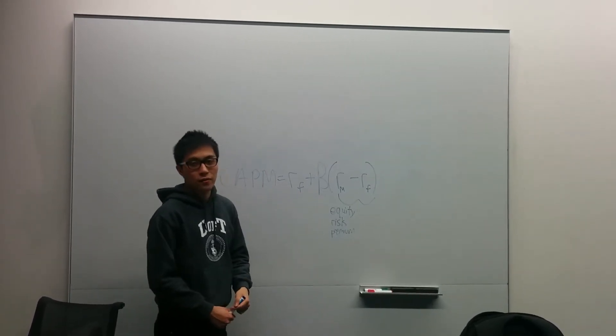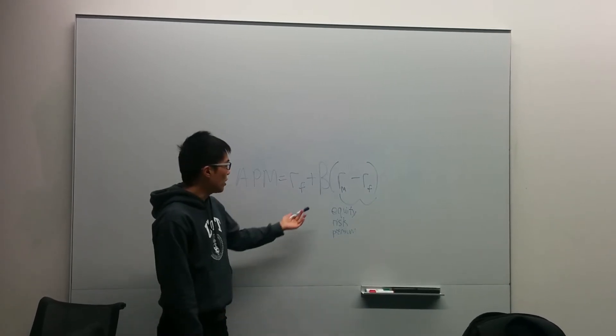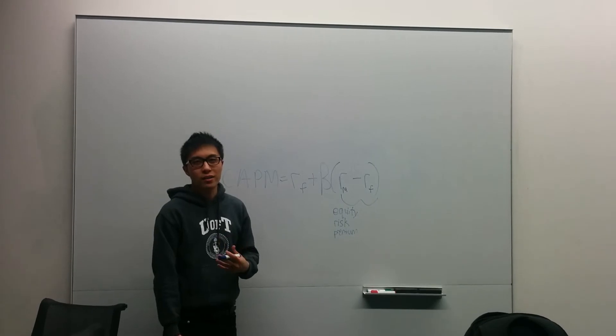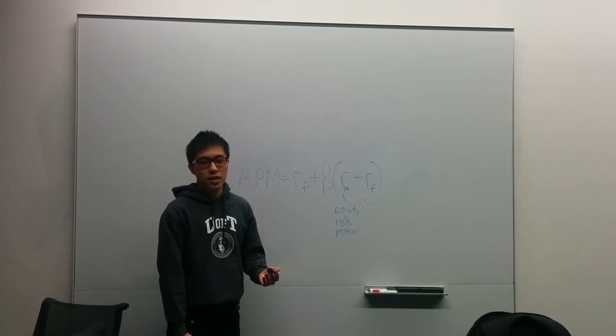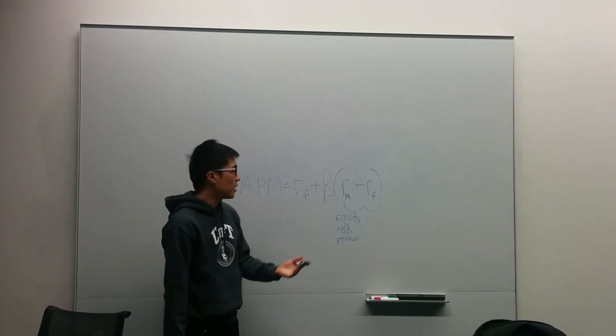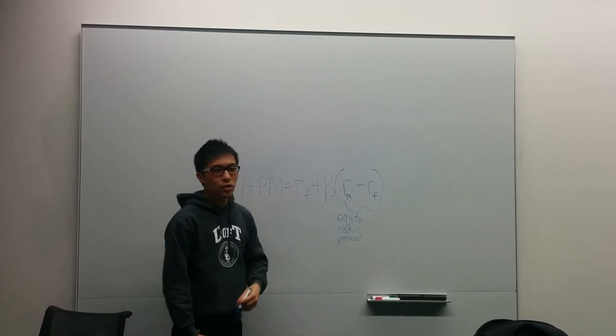And the beta can be got in several ways. As I mentioned earlier, the beta represents how much the asset that you're valuing varies with the market. So one way to do that is do regression based on the correlation between the market and the asset being valued.